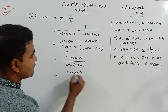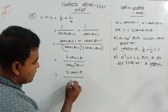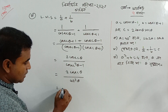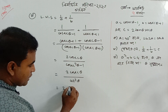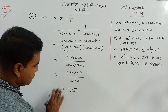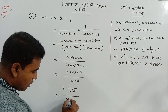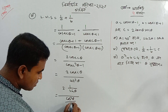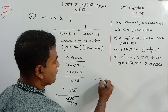Cosec theta, cosec squared theta minus 1 — that means what is cot squared theta. Cosec means 1 by sin, and cot is cos by sin. That means cos squared by sin squared.